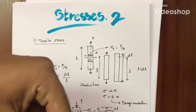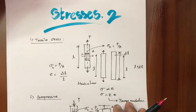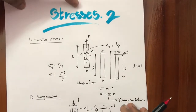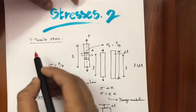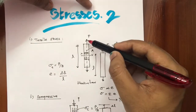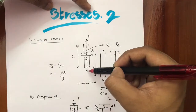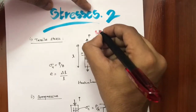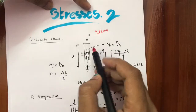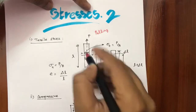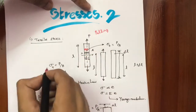We can go to Stresses Part 2. We already know the types of stresses. Tensile stress: when the load is applied on an element along the axis, it is kind of pulling, which is a tensile load. Due to tensile load, some stress will be generated inside the element. That stress is known as tensile stress.